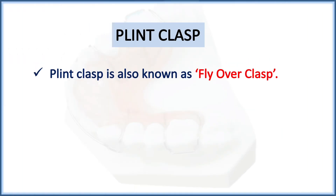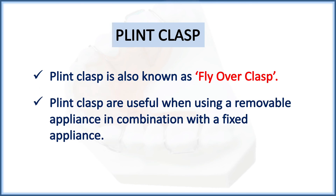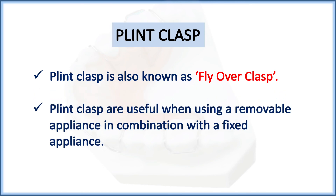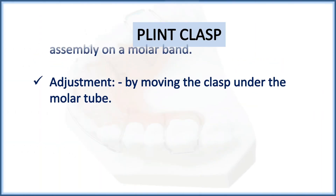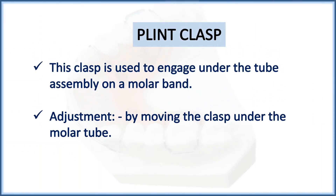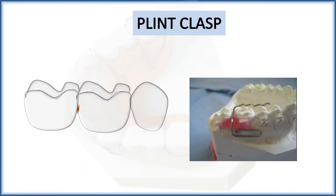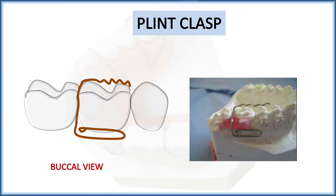The Plint clasp, also known as the flyover clasp, is useful when using a removable appliance in combination with a fixed appliance. It is used to engage under the tube assembly on a molar band, and adjustment is done by moving the clasp under the molar tube. The figure shows both buccal and occlusal views with the molar tube and the clasp adjusted into it.